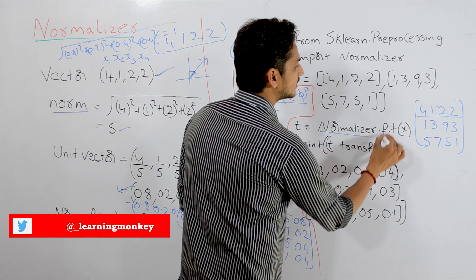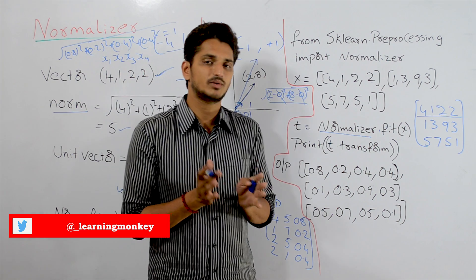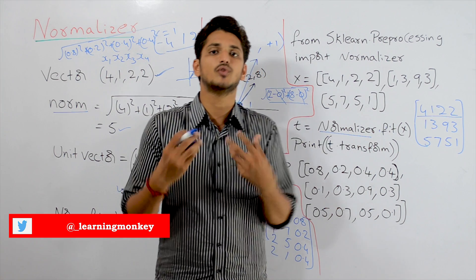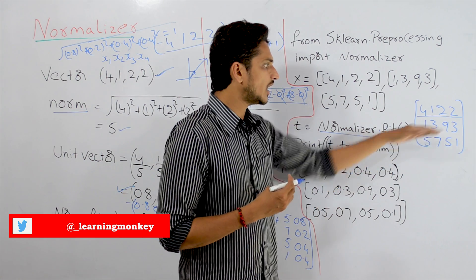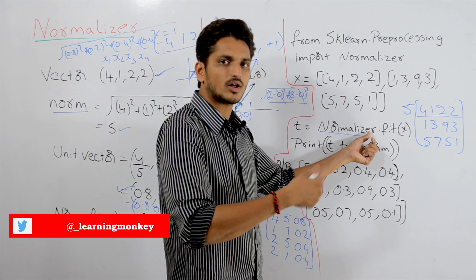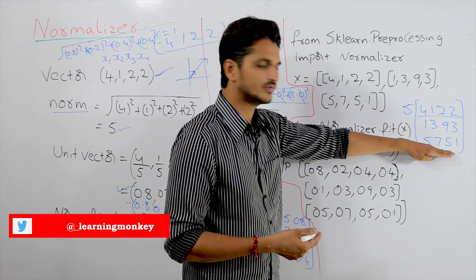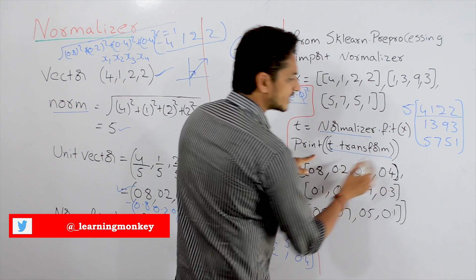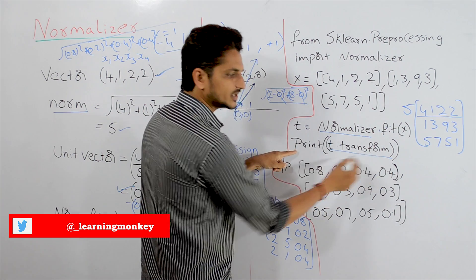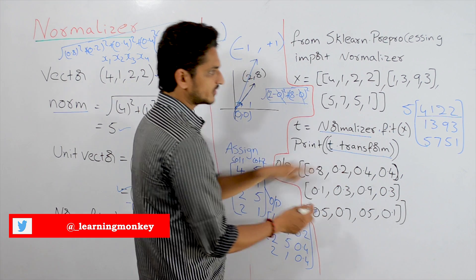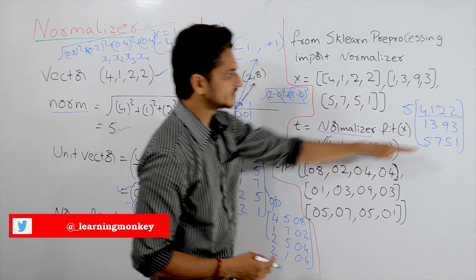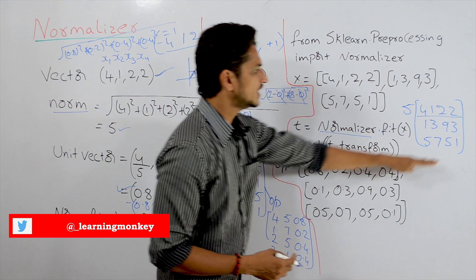We call normalizer.fit(x) — the fit method does all the calculations required to transform, which here means calculating the norm of each row vector. Then when you apply t.transform(x), the transformation is performed and we display the output: 0.8, 0.2, 0.4, 0.4 — the normalized vector for the first row — followed by the normalized values for the second and third rows.